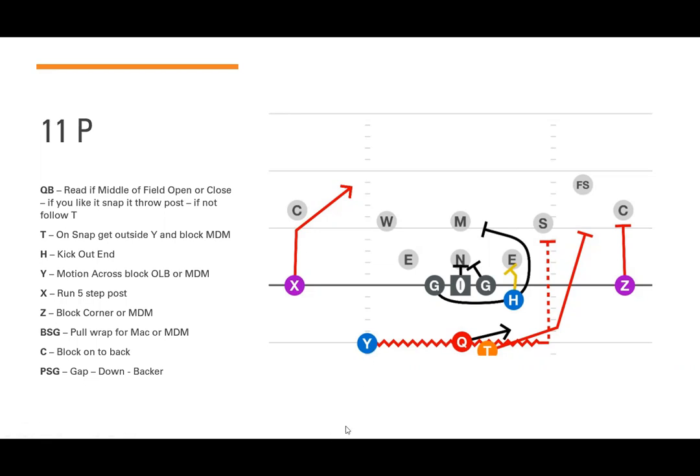This is out of 11P — one tight end and one back. Our H is basically an offset tight end off the line. We're going to RPO the backside of the play. The play is going buck sweep to the right, so the backside would be the X running a five-step post. The quarterback reads whether the middle of the field is open or closed.